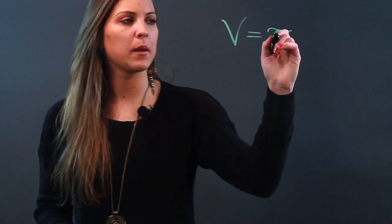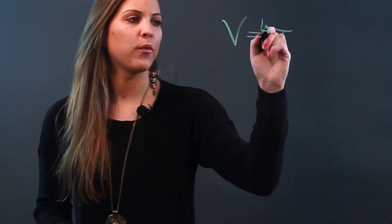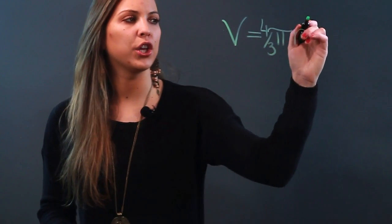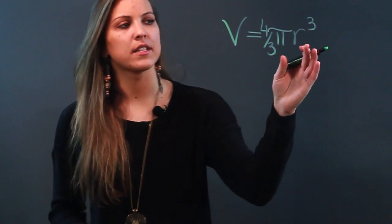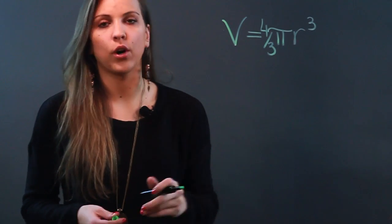The formula for the volume of a sphere is volume equals, I'm sorry, 4/3 pi r cubed. So the only variable that we have in this formula is r, which stands for our radius.